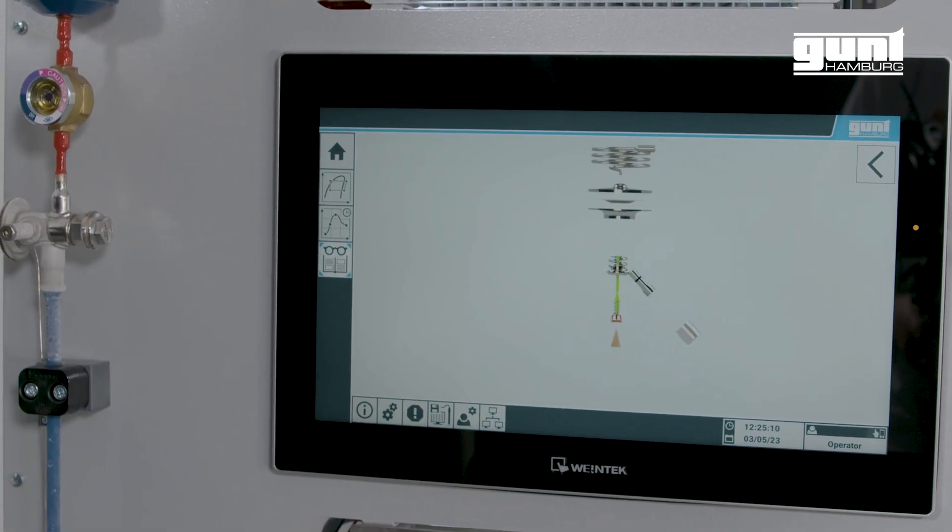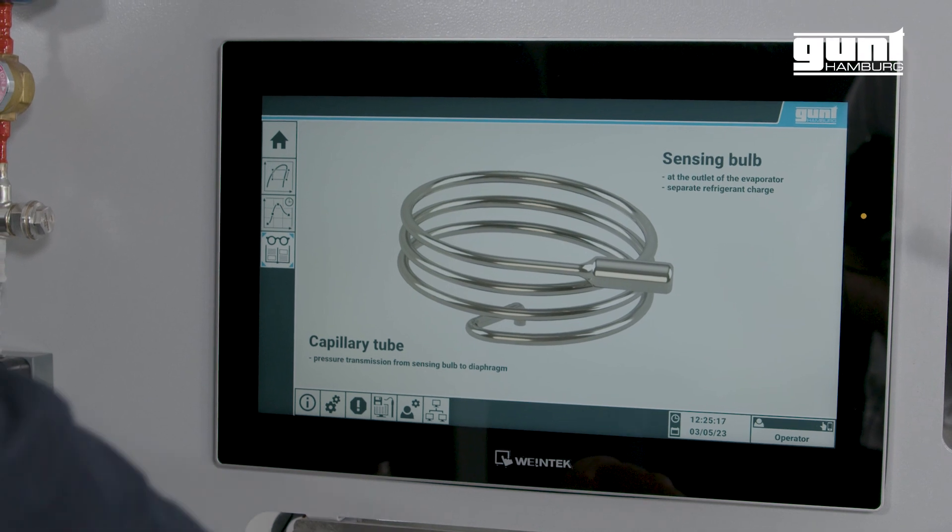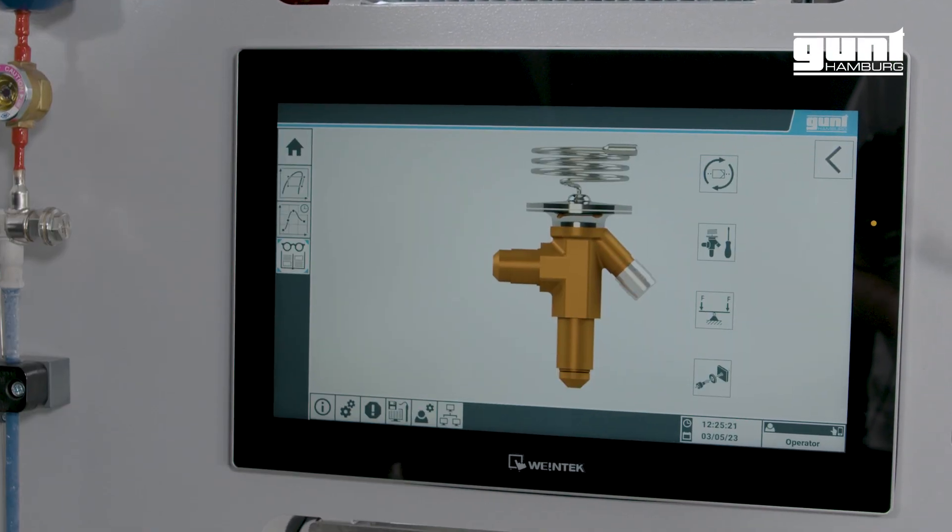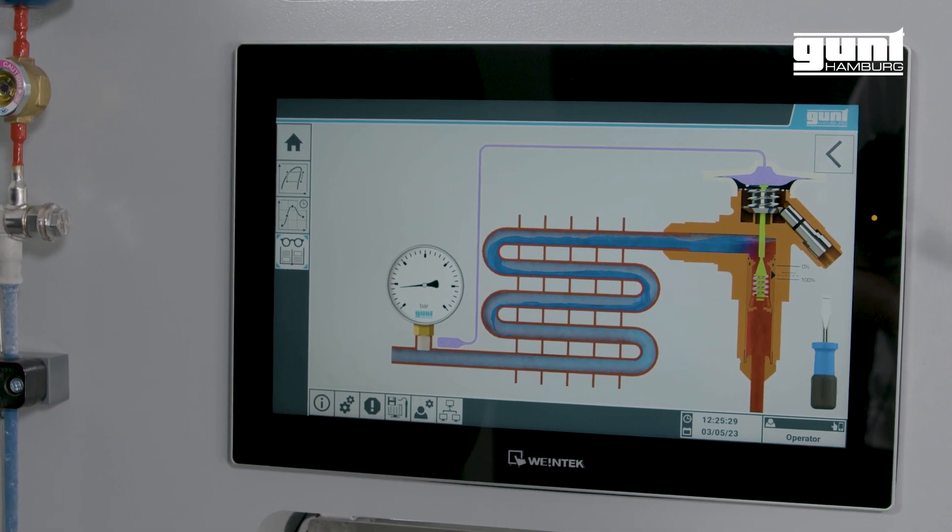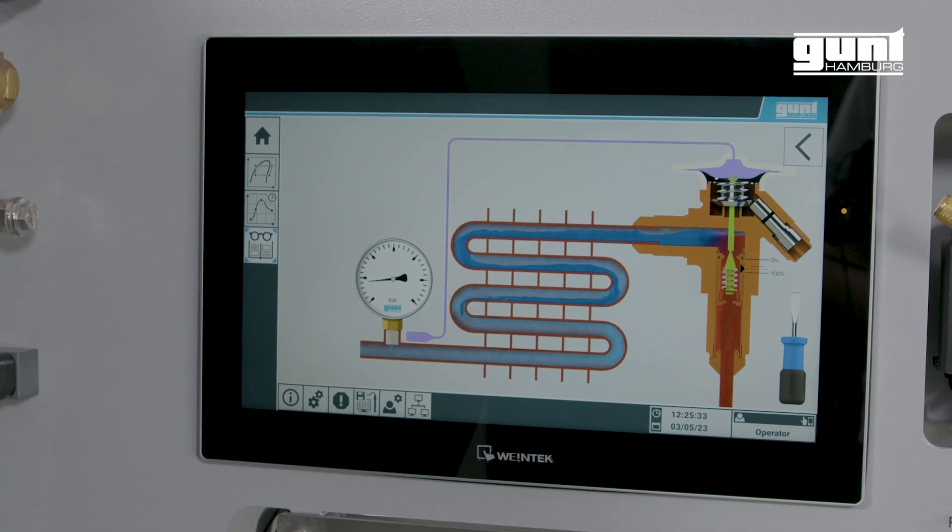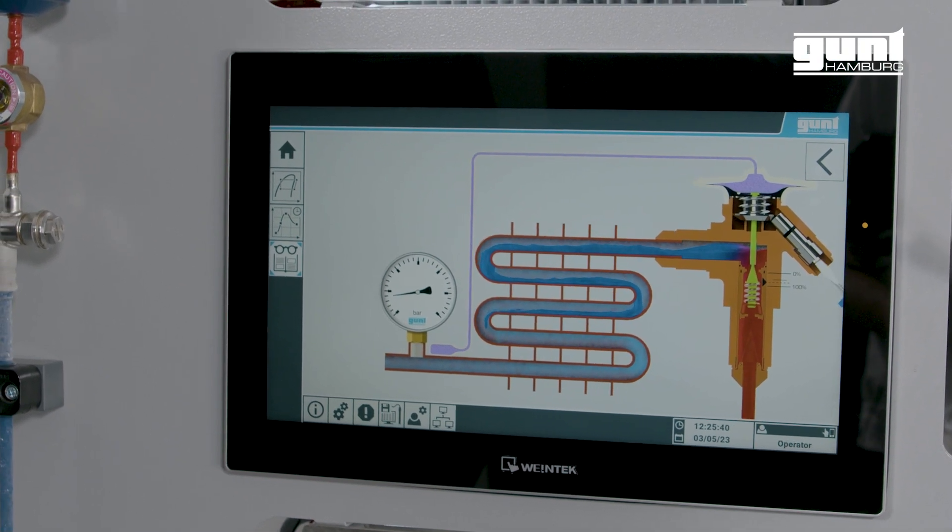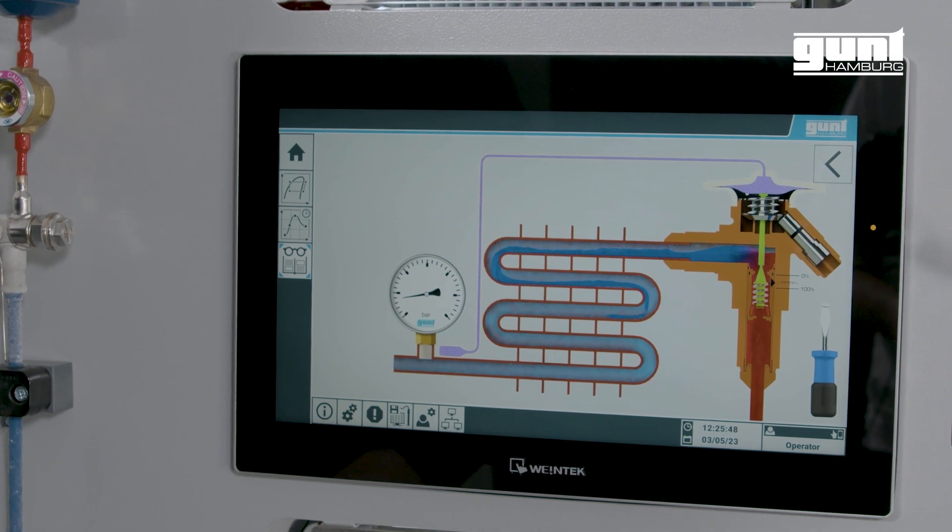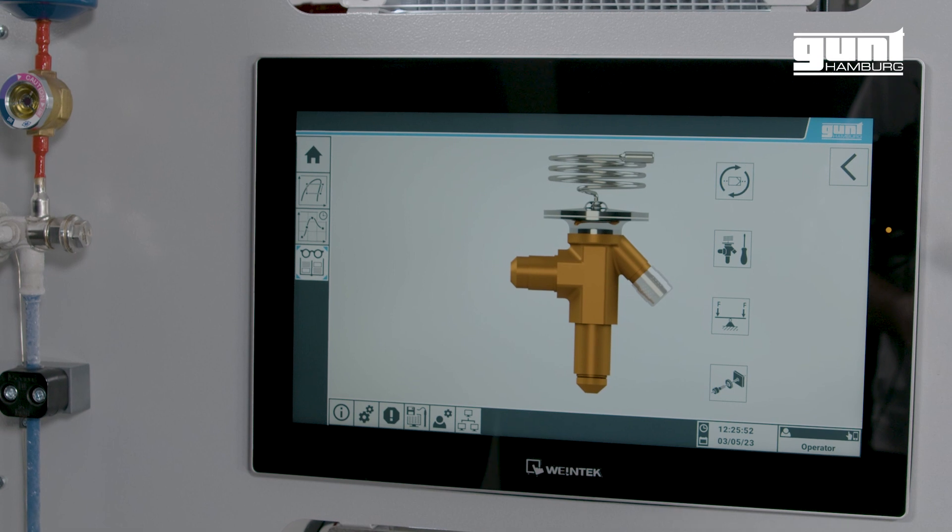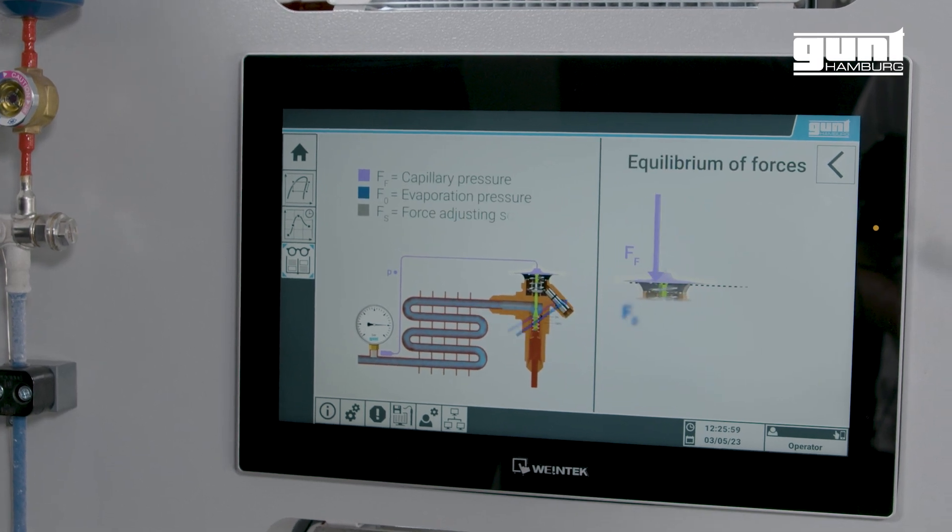And finally let's have a look at the expansion valve. Here we can see the individual parts and assemblies in an exploded view and get information about their function. Then we will take a look at the adjusting screw. Many people think that the mass flow is regulated by the expansion valve. However, this is not entirely correct. In fact, the only thing we adjust is the degree of the superheat, which determines how much the evaporator is loaded for the actual evaporation. The mass flow is determined by the thermal load and the available surface area of the evaporation.